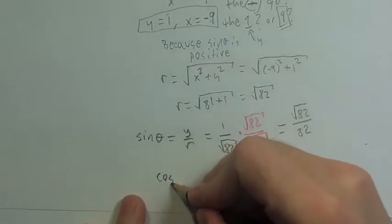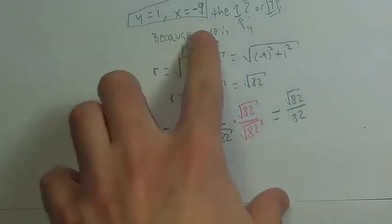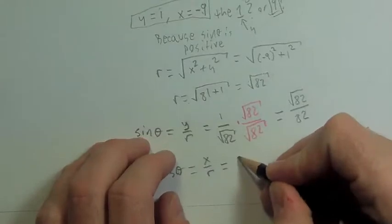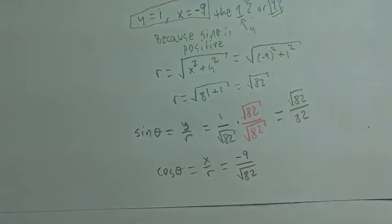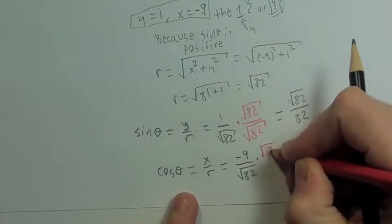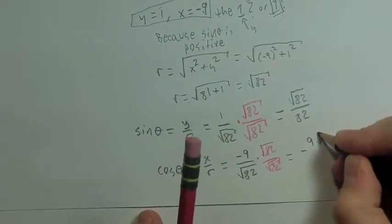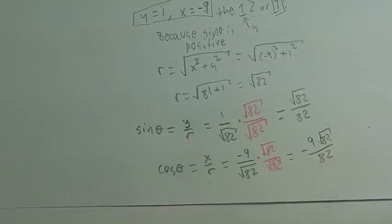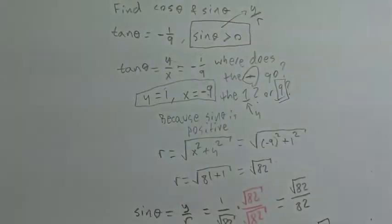So sine theta is y over r: that's 1 over the square root of 82. The directions will likely tell you to rationalize, so we multiply top and bottom by root 82 to get square root of 82 over 82. Then cosine is x over r: negative 9 over the square root of 82. Rationalizing gives us negative 9 square root of 82 all over 82. From there we can find all the others by flipping things around.